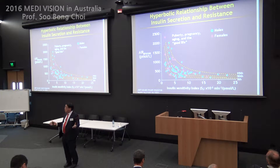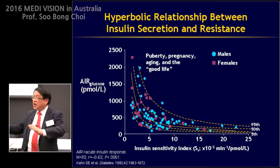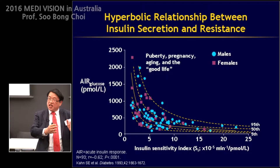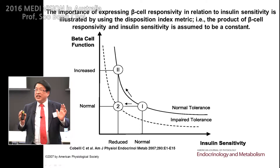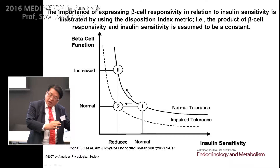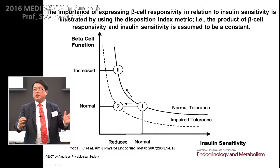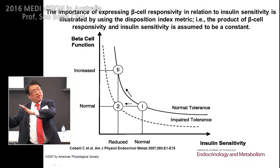These two abnormalities have a reciprocal, hyperbolic relationship. When insulin sensitivity increases, insulin circulation is decreased, and vice versa. In diabetes, this hyperbolic relationship shifts to the left and downward — that is diabetes. So when we move this relationship upward and rightward, we can conquer diabetes mellitus.